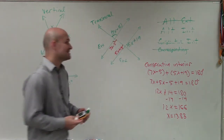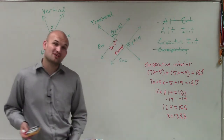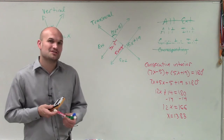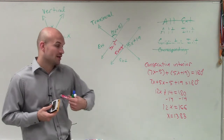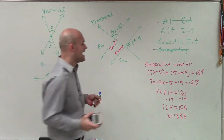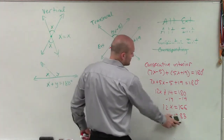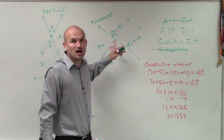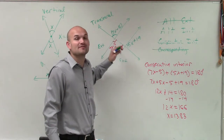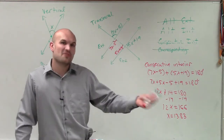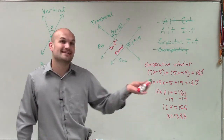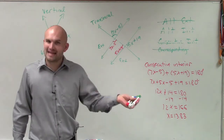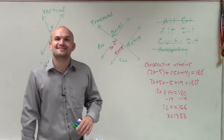So there you go. That is how we use vertical angles and consecutive interior angles to prove that the two lines are parallel. At x equals 13.83, these two consecutive interior angles are supplementary. Therefore, by using the converse of the consecutive interior angles theorem, we have parallel lines.